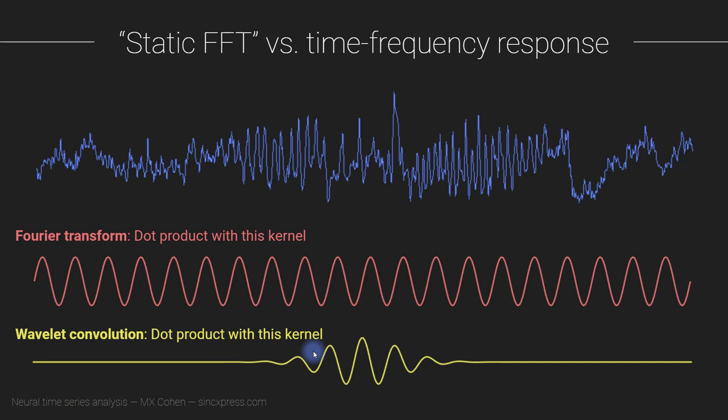So with wavelet convolution, we came up with the solution of taking this kernel and sliding it along the data. But you might also have come up with the solution of instead of doing the Fourier transform on the entire signal, you only do the Fourier transform on one little segment of the signal.